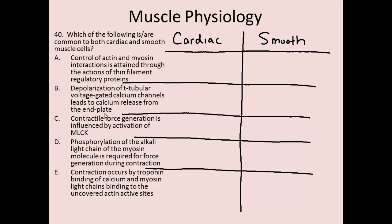Looking at our first response: the control of actin and myosin interactions is attained through the actions of thin filament regulatory proteins. The first thing to think about is which filament is the thin filament — we should automatically associate thin with actin. There are two different regulatory proteins involved with actin: troponin and tropomyosin.